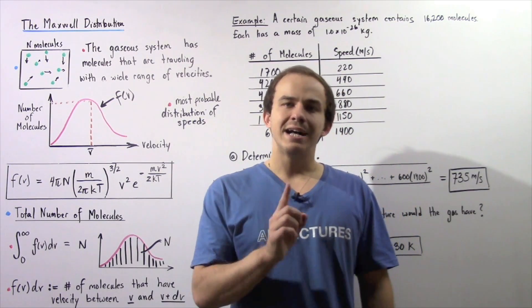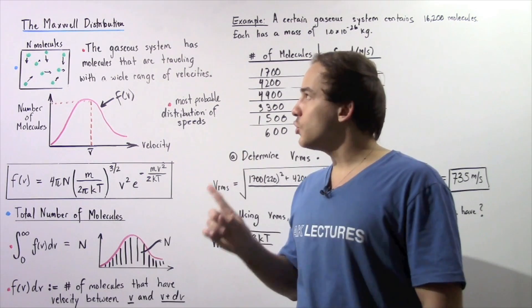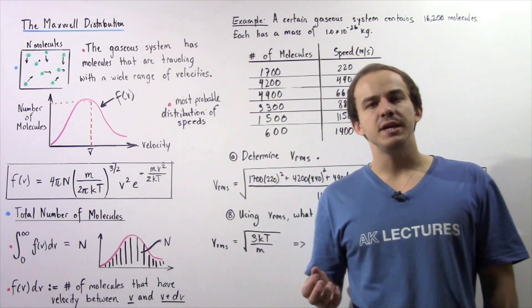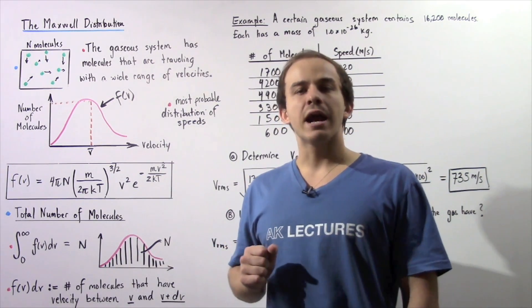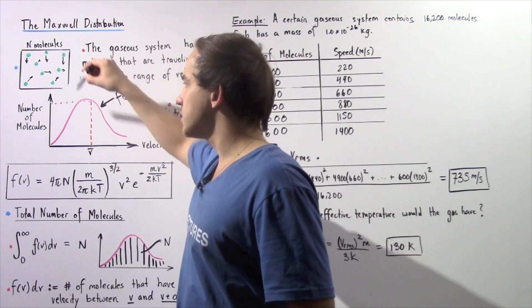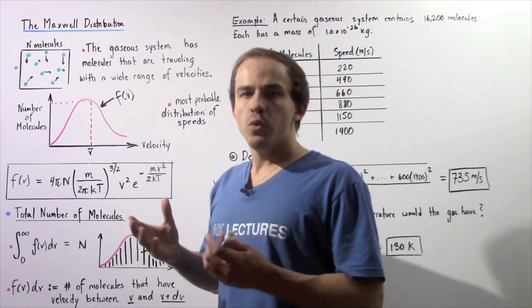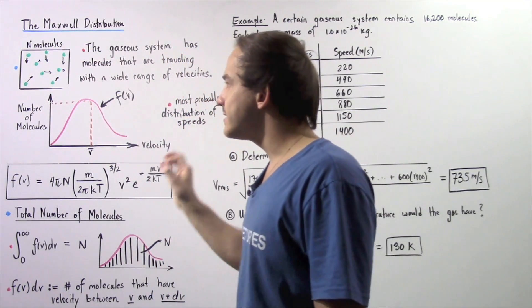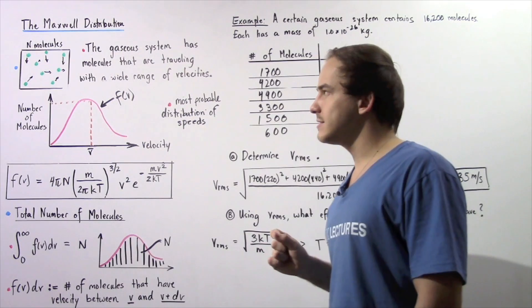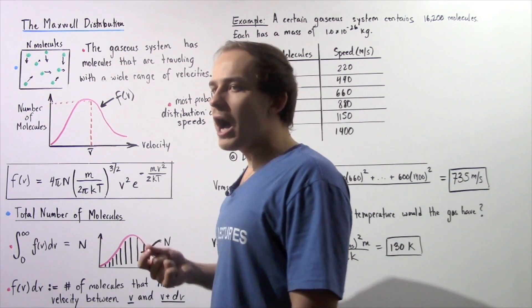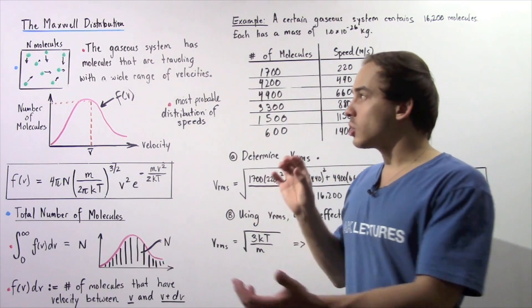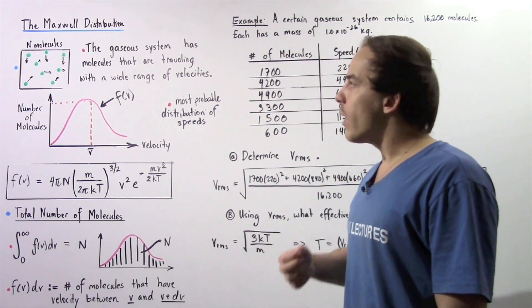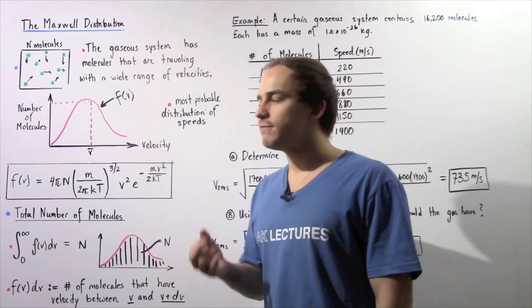In this lecture, we're going to discuss a concept known as the Maxwell distribution. The Maxwell distribution essentially gives us the most probable distribution of the speeds of our gas molecules inside our gaseous system. Let's suppose we have a closed container with n number of gas molecules inside. If we examine the speeds of the molecules, we'll see there is a wide range of velocities — some molecules colliding with the walls have zero velocity, momentarily at rest, while others have a very high velocity.